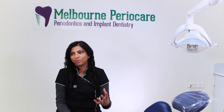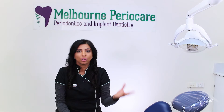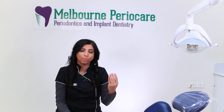Back in 1953, Glickman and his co-workers gave the first ever classification of furcation involvement, and it was graded from grade one to grade four, with grade four being the most severe. In grade one, it was an incipient lesion, and grade two was obviously more involved.